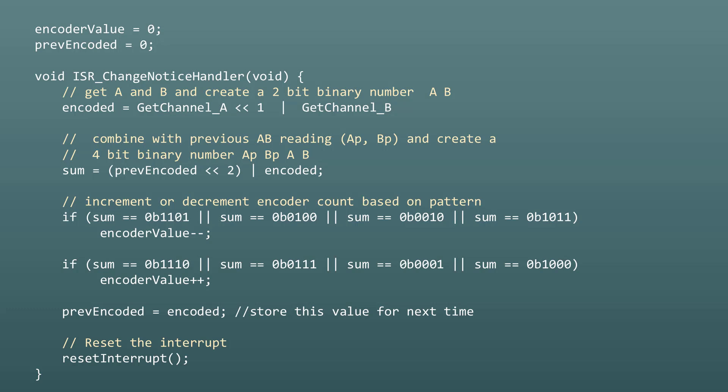If you inspect the code carefully, you'll see that it compares the values of the digital inputs from the A and B channels at the current time with the past readings, and then determines if the grating is moving clockwise or counterclockwise. It then adds or subtracts one from the total count.